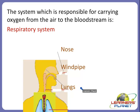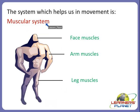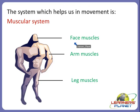The respiratory system carries the oxygen we inhale from the air to the bloodstream - that is, the blood which is present in our body. The muscular system helps us in movement and includes the face muscles, arm muscles, and leg muscles.